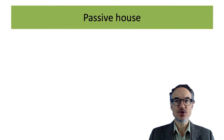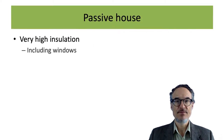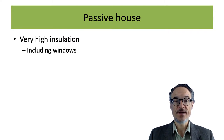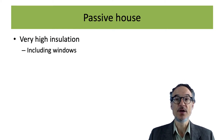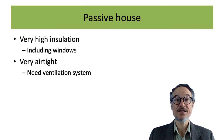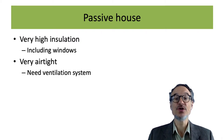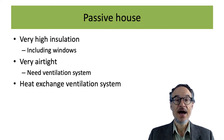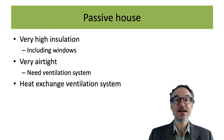Passive House has very high levels of insulation with special care about windows and the heat performance of windows. The air tightness is very high, so because it's very airtight, it also usually needs a ventilation system — active ventilation — and this active ventilation is usually a heat exchange ventilation system.